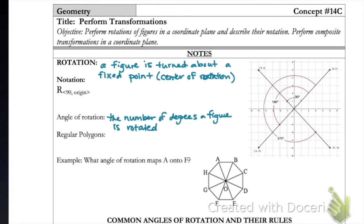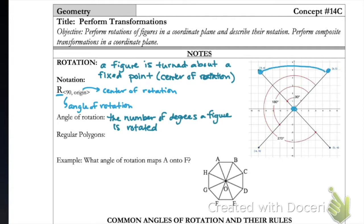Let's talk about notation for rotation. We are going to use a capital R for a rotation — remember a lowercase r is for a reflection. In our subscript we always write the angle of rotation first, in this case 90 degrees, followed by the center of rotation, which here is the origin — the center of our coordinate plane.